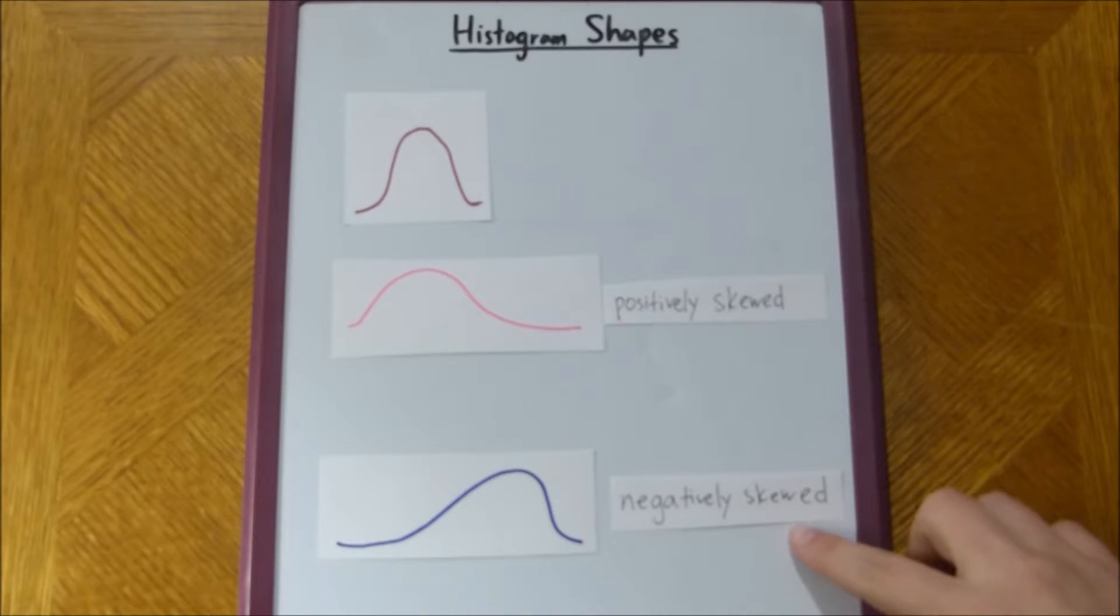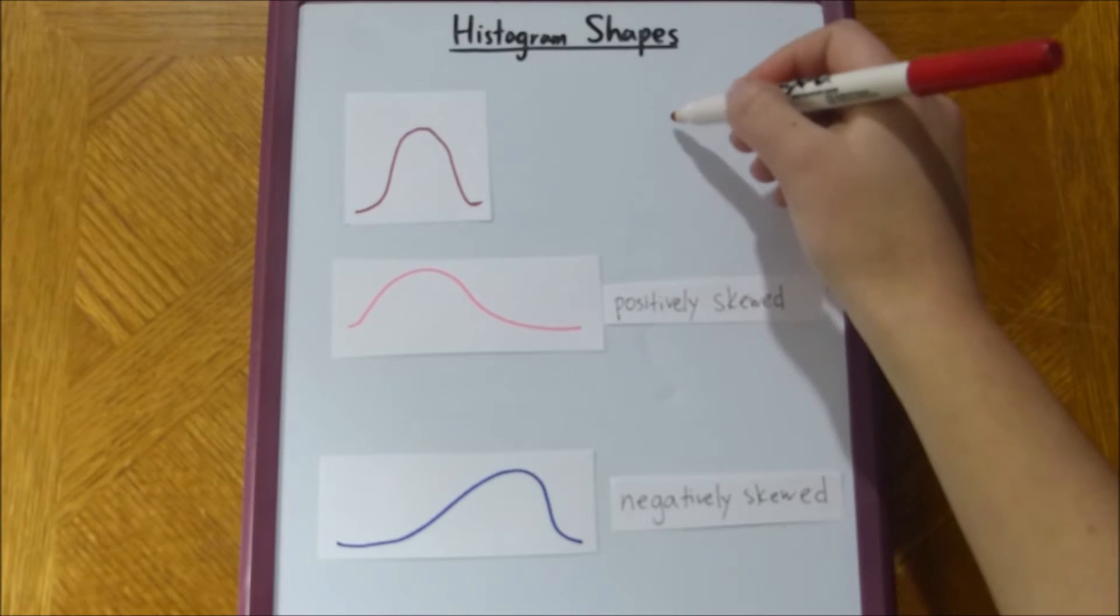And then, this lower one is negatively skewed, because the lower tail stretches out a lot further than this upper tail. The way I like to memorize it, these names, is if you think of, sort of, a plot,